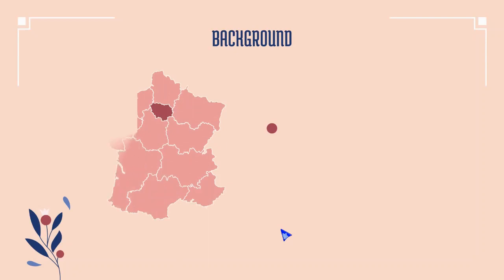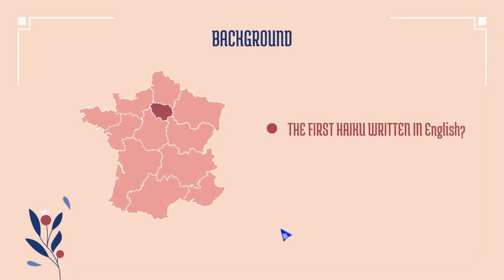The poem happened in Paris, and some say it is the first haiku written in English — adapted into English. Notice that Japanese and English belong to two different linguistic categories. In English we use words and sentences, while Japanese is a syllabic language in which meaning is conveyed through the pronunciation of syllables. These two different language systems naturally produce different kinds of poetry.